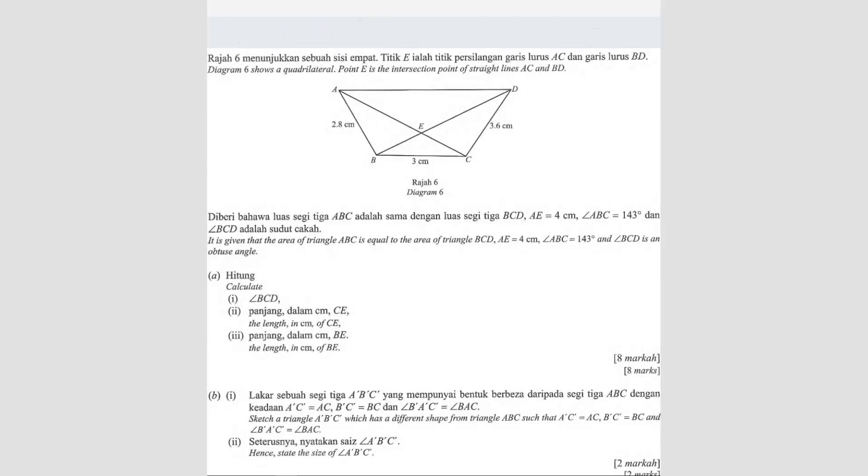The question is asking: given that area of triangle ABC, so this is ABC here, is equal to the area of BCD. So BCD is here. These two triangles are the same. What else do they say? AE is 4 cm, so from here to here is 4 cm. And then angle ABC is 143 degrees. And then angle BCD - BCD is here, it's an obtuse angle.